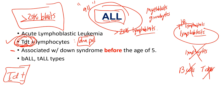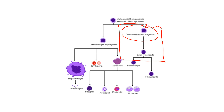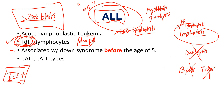There are two subtypes of ALL. Going back to the pathway, there's a pro-T cell blast and a pro-B cell blast, and both are considered ALL if you have massive proliferation of at least 20% of them. So the question becomes: are you having proliferation of the pro-B cells or the pro-T cells? They present differently, so let's go over both.